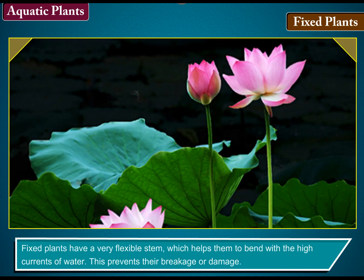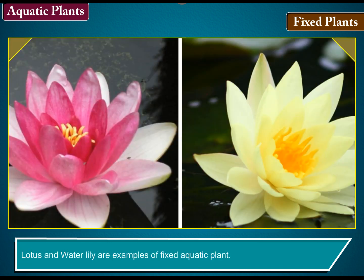Fixed plants have a very flexible stem which helps them to bend with the high currents of water. This prevents their breakage or damage. Lotus and Water Lily are examples of fixed aquatic plants.